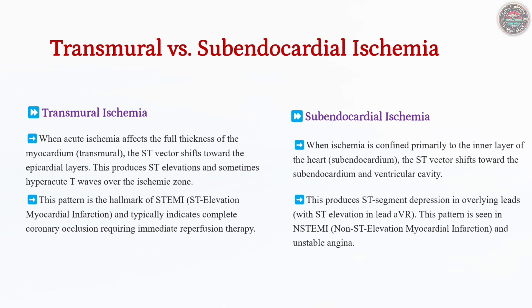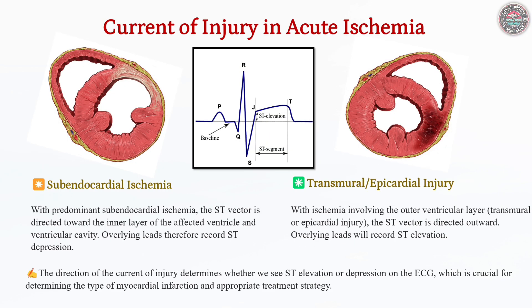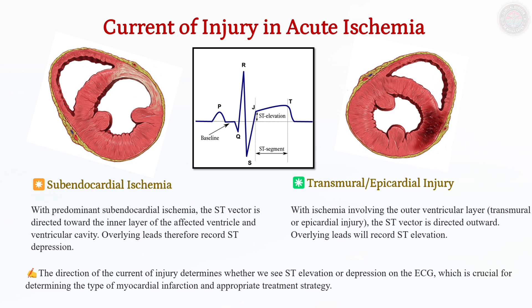The current of injury describes altered electrical activity in ischemic myocardial tissue. In subendocardial ischemia, this current is directed toward the ventricular cavity, causing ST depression in corresponding leads. In transmural ischemia, it shifts outward toward the epicardium, resulting in ST elevation. Understanding this principle is fundamental in differentiating STEMI from NSTEMI and guiding urgent therapeutic decisions.